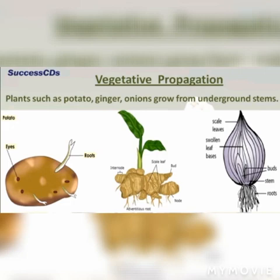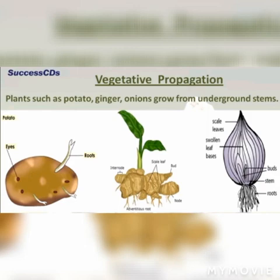The next method is from underground stems. You might think that stems always grow above the ground, but some plants like potato, ginger, and onions grow from their underground stems. These underground stems are often mistaken for roots, but they are not roots — they are underground stems. When we plant these stems, they grow into a new plant.